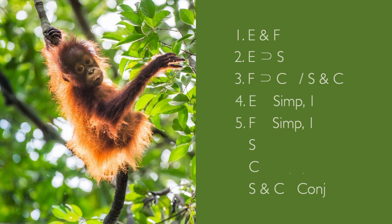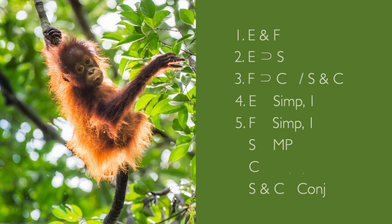So far, so good. But we still have to explain how that s got there. Remember, we planned on getting it from here using modus ponens. But to do so, we need e — and we do have e. It's right here, down in line 4. So we got this s using modus ponens, lines 2 and 4.